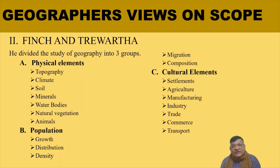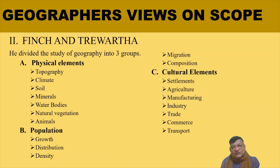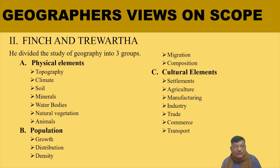French divided the scope of human geography into three categories: Physical Elements, Population, and Cultural Elements. Physical elements include landforms, climate, soil, minerals, etc. Population category requires the study of growth and distribution. This is the essential scope of human geography.